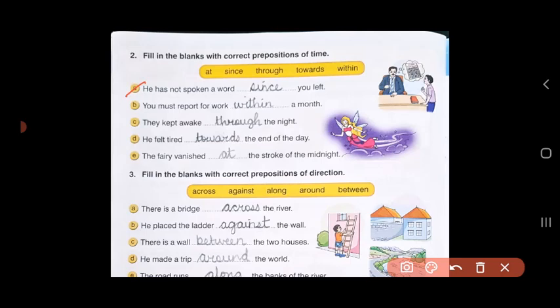Now let's do question 3. Here you have to fill in the blanks with correct prepositions of direction. The words are across, against, along, around, and between. There is a bridge across the river.